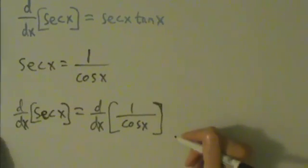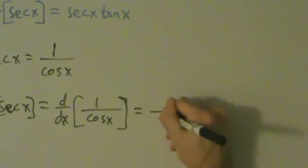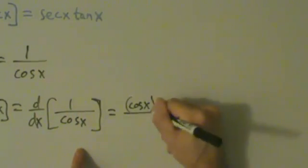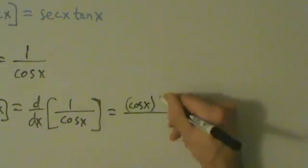All right, so then what we have is quotient rule. Here's our top, here's our bottom. Quotient rule says the derivative of that is going to be bottom, which is cosine of x, times the derivative of the top. The top is 1, so the derivative of 1 is just a constant, right? So its derivative is 0.